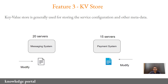The third feature is the key-value store, generally used for storing service configuration and other metadata. Let's say you have 20 servers of messaging system and 15 servers of payment system, and you're adding configuration associated with the application hardcoded into each server. If after a few days you want to modify some parameter in the configuration file of the messaging system, you would have to log into all 20 servers, modify the application configuration on each one, and maybe restart the application — that's a cumbersome process. With the help of the KV store, this can be automated in a much easier way.